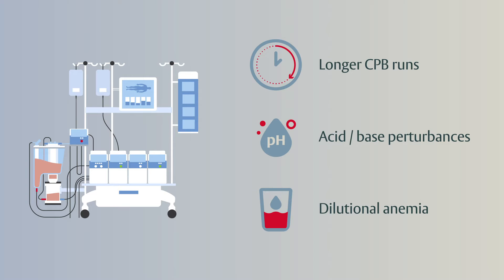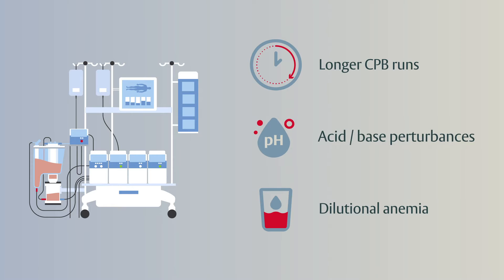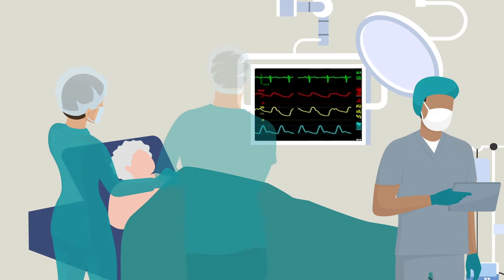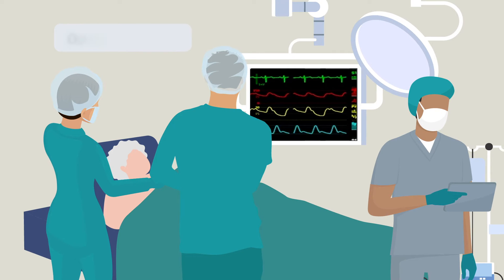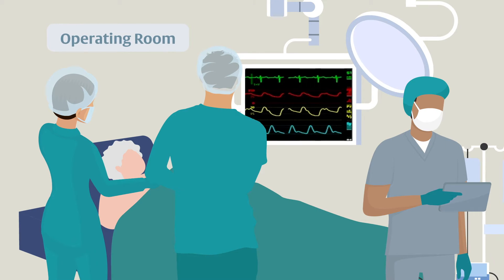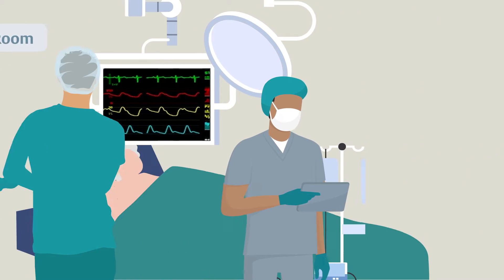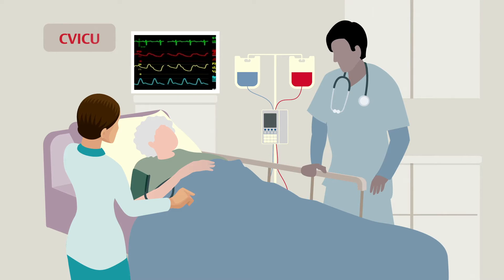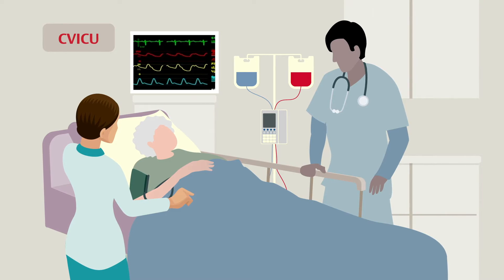Many times, these patients have had longer cardiopulmonary bypass runs, have more acid-base perturbances, and may have some dilutional anemia. Once off cardiopulmonary bypass and the chest is closed, these patients arrive in the ICU, often with ongoing hemodynamic issues.